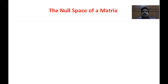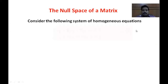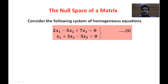Now let us discuss today's topic — the null space of a matrix. Let us go through this concept using a simple example. Consider the following system of homogeneous equations. We have taken two equations with three variables x1, x2, x3. The result is 0, that is why we call them homogeneous equations. For any linear homogeneous equations, we have two options: it may have a zero (trivial) solution, or there may be other solutions.